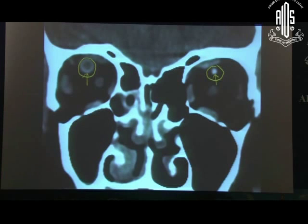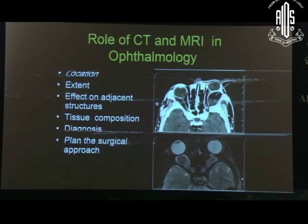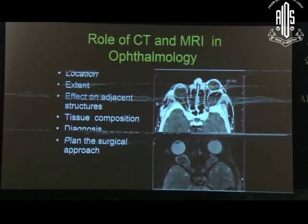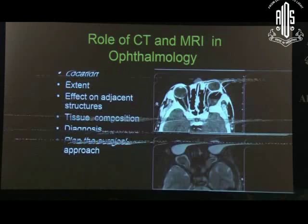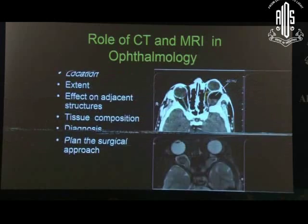So it is as simple as that. Without looking at the patient, just looking at the coronal scan — one single scan — you are able to diagnose this condition, which is a medical emergency. CT scan and MRI can make life so simple if you know how to interpret. The role is to localize a lesion and know the extent if you are planning surgery.